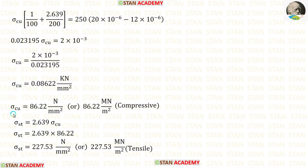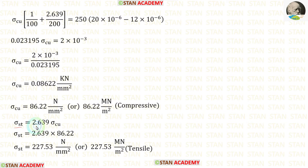After the calculation we obtain σ_Cu, which we can express in N/mm² or MN/m². Since copper is being compressed, σ_Cu is compressive. Since σ_ST equals 2.639 × σ_Cu, multiplying gives us σ_ST, which is tensile.